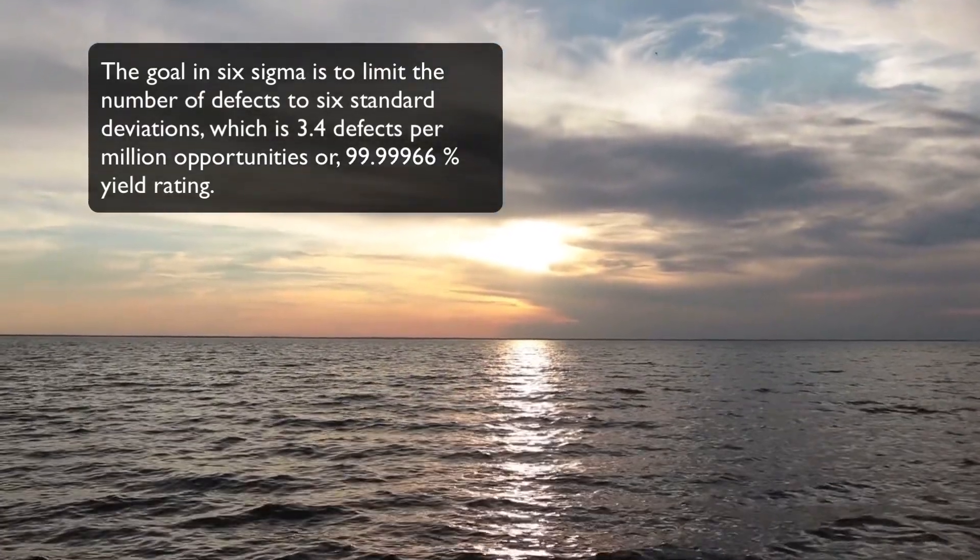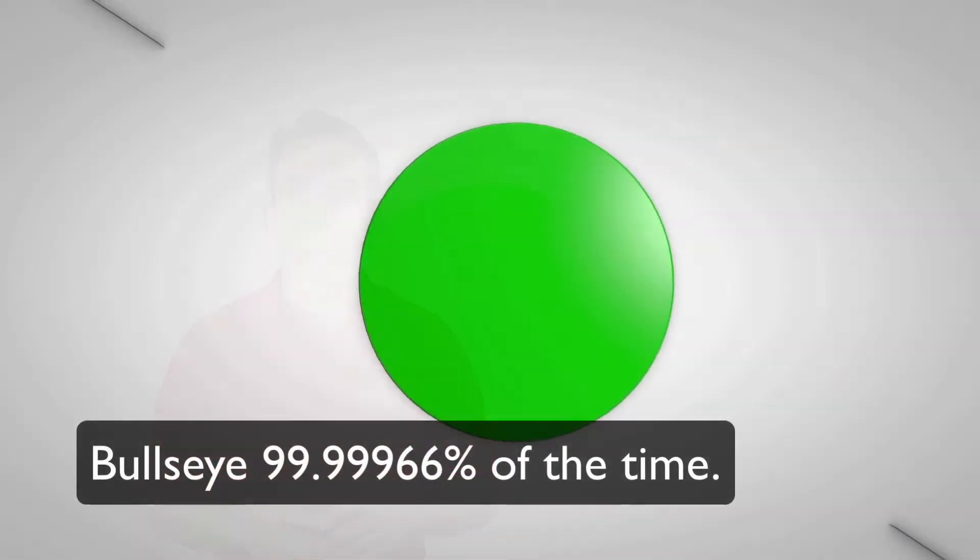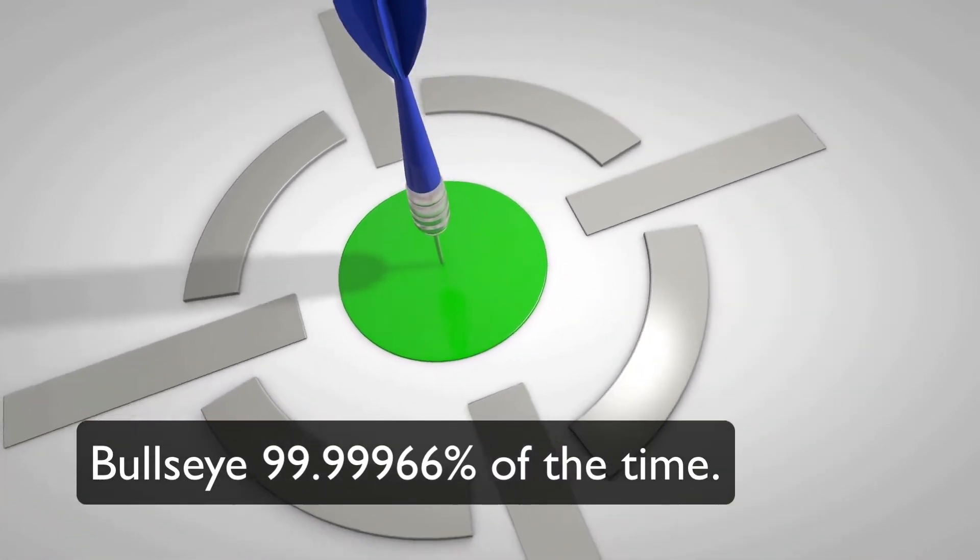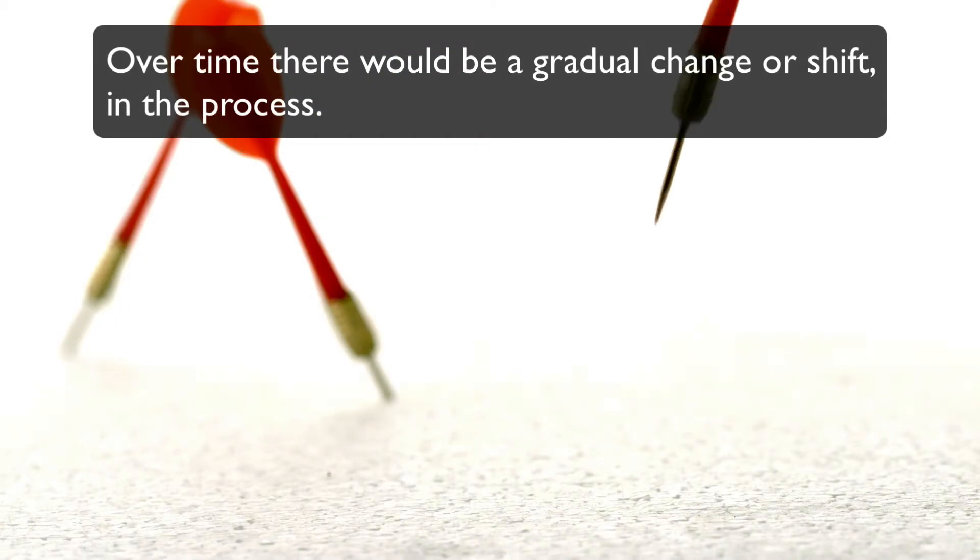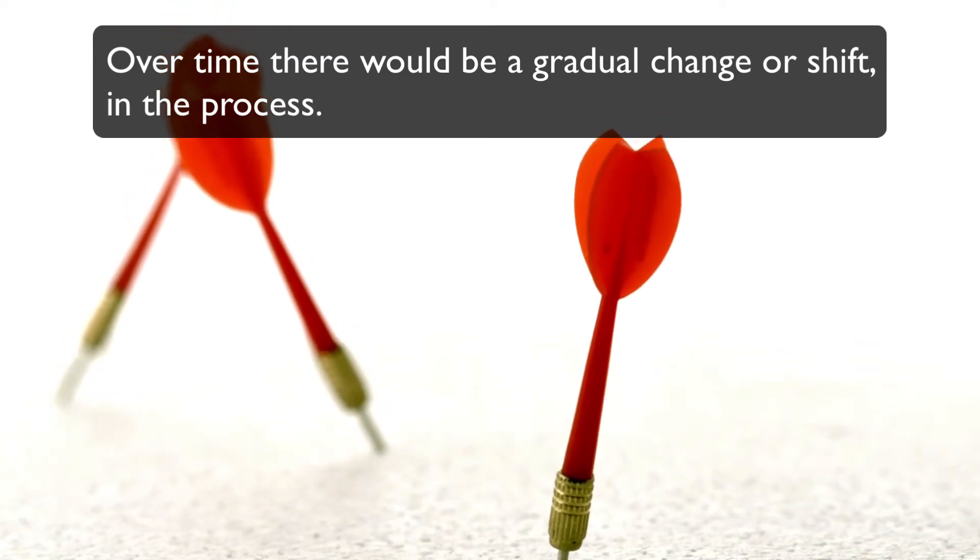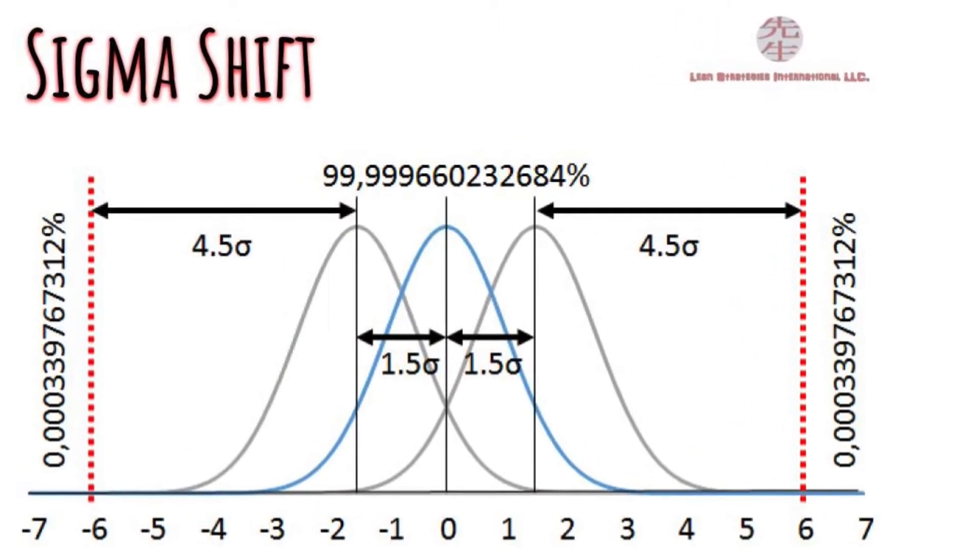With that said, most processes will develop some variation or shift over time. Let's look at our example again. Let's assume we were able to establish a bullseye 99.99966 percent of the time. One could assume that over a period of time there would be a gradual change or shift in the process. Like darts, most business processes tend to vary over time. To account for the shift or deviation of 3.4 defects per million opportunities, Six Sigma uses a plus or minus 1.5 sigma shift.